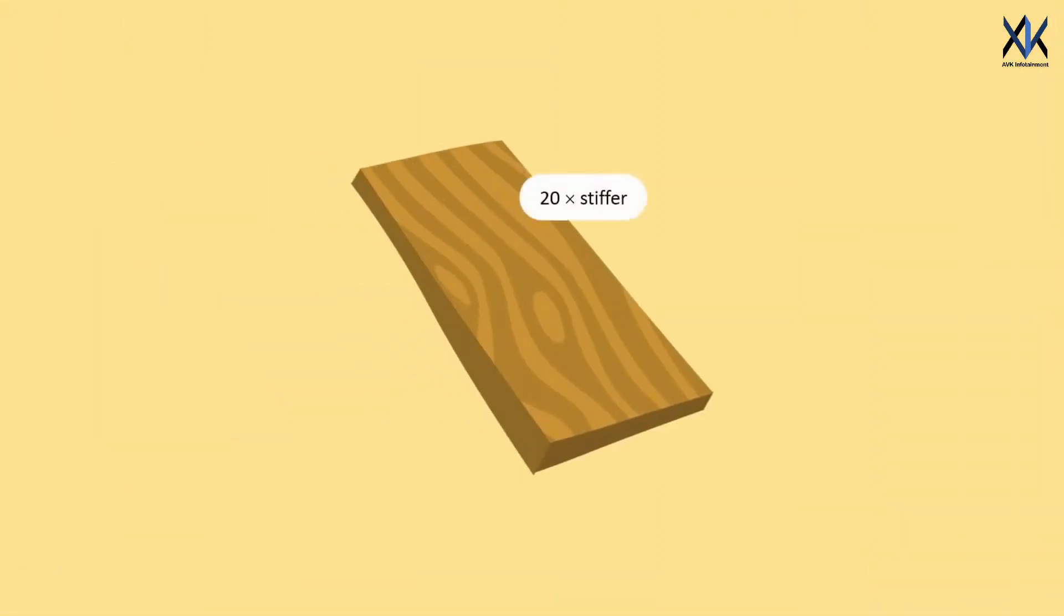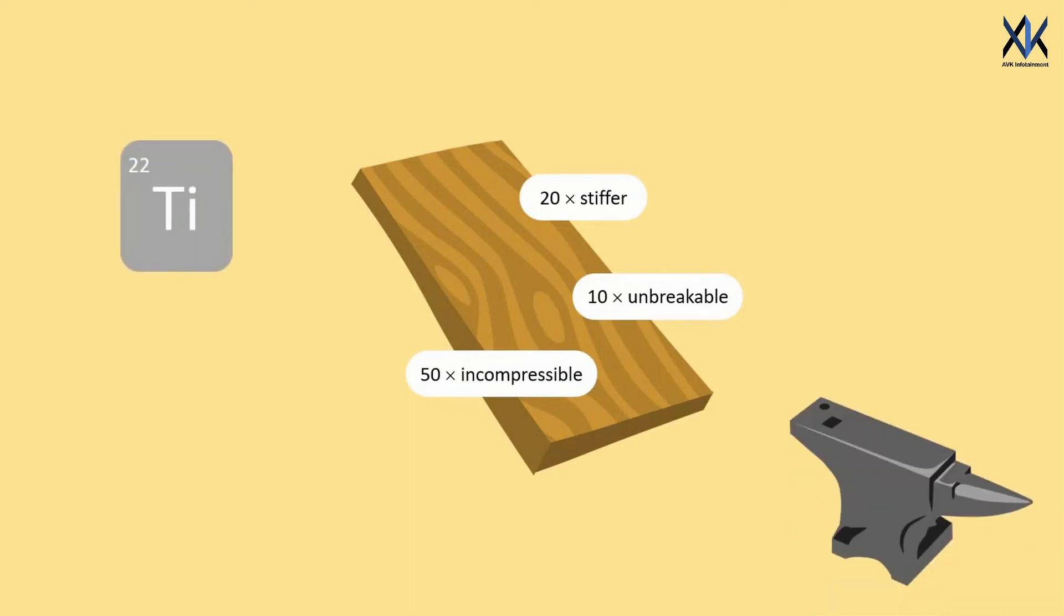And then the wood becomes 20 times stiffer, 10 times harder to break, and 50 times more resistant to compression. It's not just stronger than steel, it's stronger than some cutting edge titanium alloys.